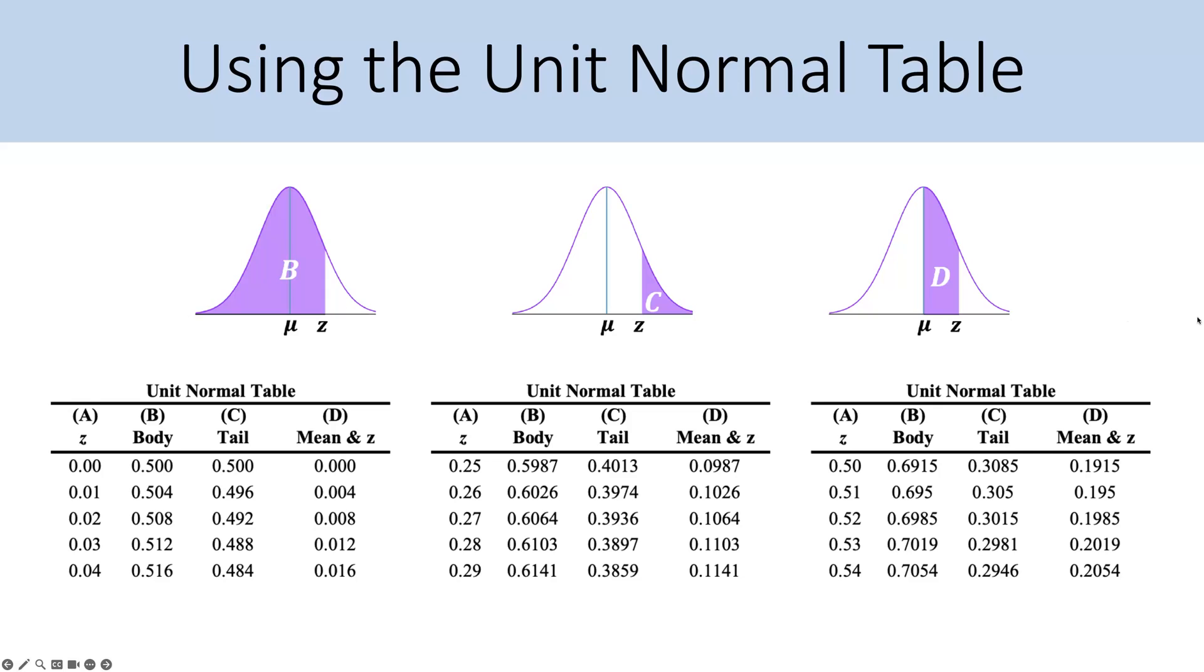I just added the pictures to them. The idea behind the unit normal table is that we can calculate a z-score, and then using column A, where we look for our z-score, we can estimate probability of randomly selecting various scores. Column B is the body, when we have more than half of the distribution on one side. The tail is when we're looking for just a tail on one side. We can also look from the mean to z.